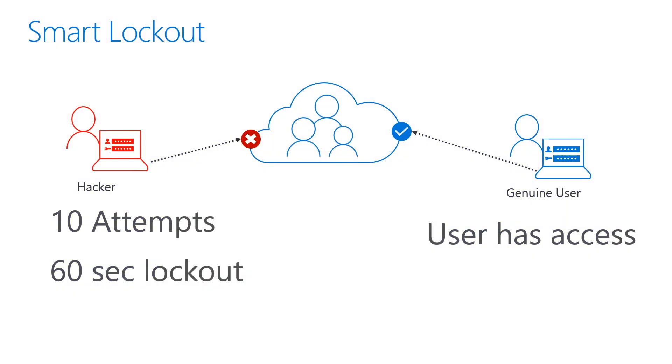In addition to leveraging the banned password lists, password protection also enables customers to set their own lockout settings. Account lockout is something you may have experienced with other services — we've all forgotten our passwords and tried to guess it multiple times, only to end up being locked out of our account. Traditional lockout systems lock out both the bad actor and the genuine user. We wanted to make a protection mechanism that prevented bad actors from getting into your account while allowing the genuine user access to their account. This is where Smart Lockout comes into play.